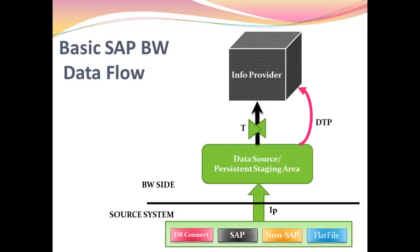The source system can be of any type: SAP, non-SAP, DB connect, or flat file. No matter what the source system is, the data flow will be the same for all different types of sources. Primarily, the data from the source system enters into our data source on the BI side with the help of an info package. Then the data is further moved from the data source to the info provider with the help of transformation and DTP.